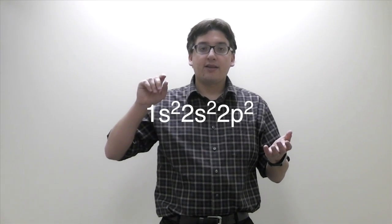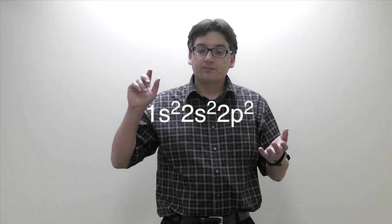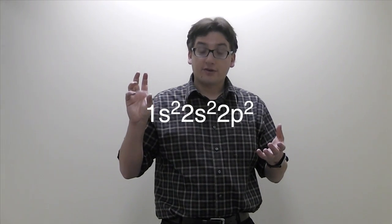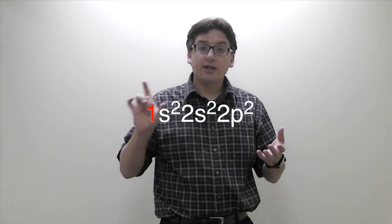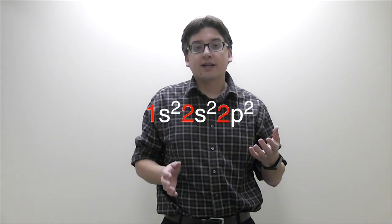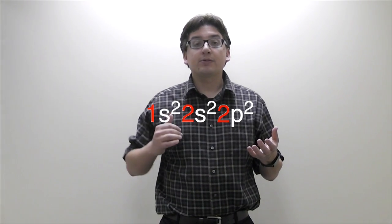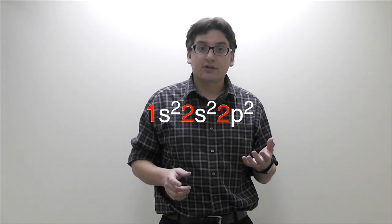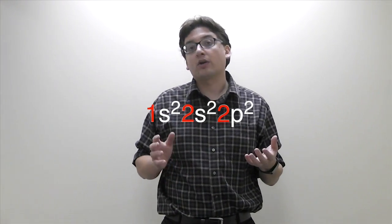So that means that the principal quantum numbers are the first numbers for each group. So that's the 1, 2, and 2. So which one's the biggest? 2. That means that all of the electrons that have principal quantum number of 2 are the valence electrons, and everything with a lower number are the core electrons.